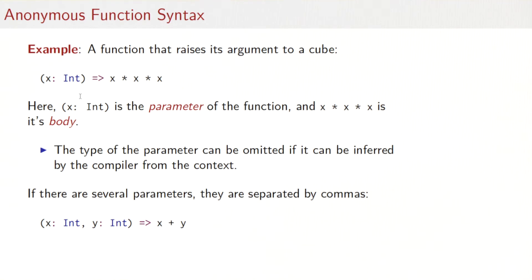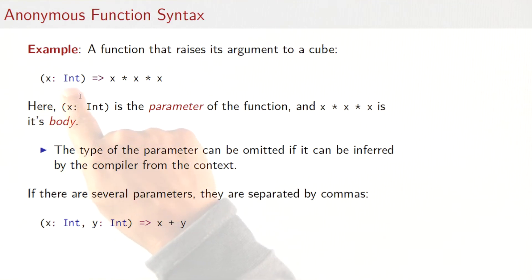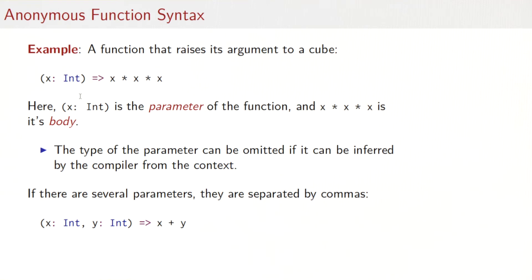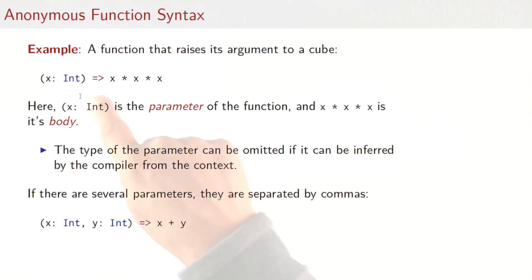Here's how we write anonymous functions. As an example, let's consider the function that raises its argument to a cube. That would be written as follows: it takes a parameter x of type int, then comes an arrow, and then comes the body of the function — x times x times x. So x colon int is the parameter of the function and on the right-hand side of the arrow is the body. The type of the parameter can be omitted if the compiler can infer it from the context. And if you have several parameters, you can write them in a list separated by commas.